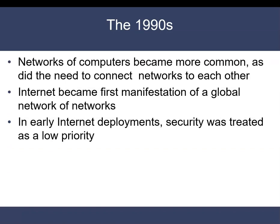In the 90s, as networks of computers became more common, there was a need to connect the networks to each other. This gave rise to the Internet, which is the first appearance of a global network of networks, all these networks communicating with each other. The growth of the Internet came at a costly price of treating security as a low priority. They were all concentrating on how to connect these networks together, but not concentrating on what security procedures were needed to protect information passing through these networks.